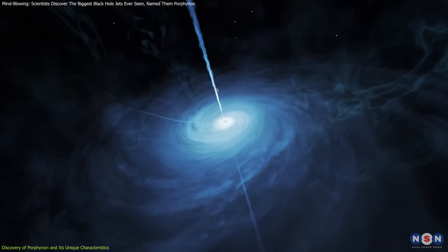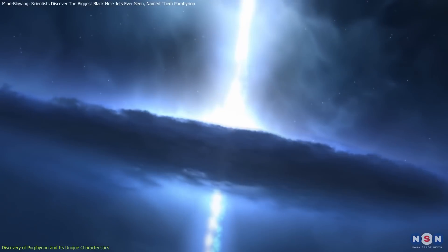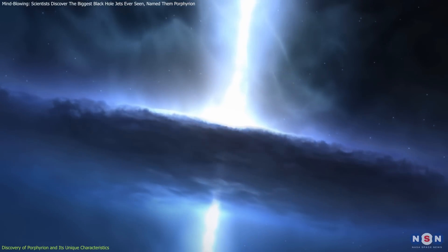The sheer size of Porphyrion is mind-boggling. It's 40% larger than Alcyoneus, making it the most enormous known structure of its kind in the universe.